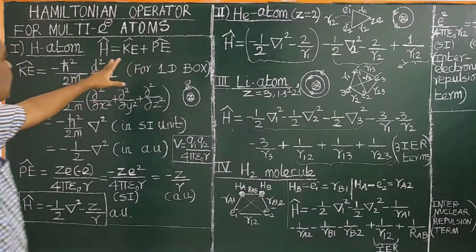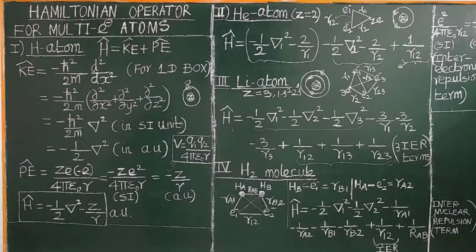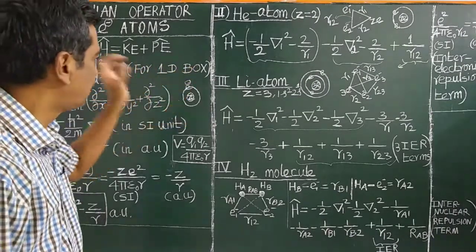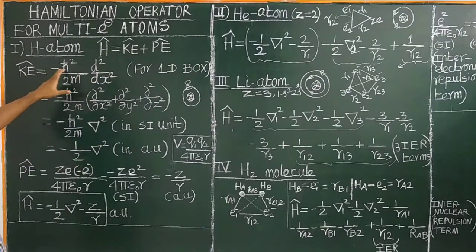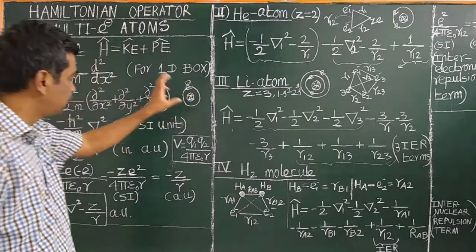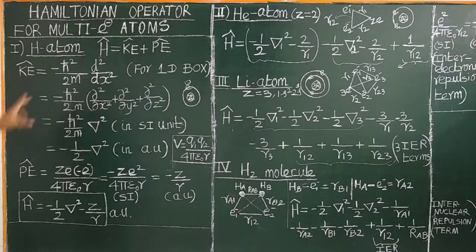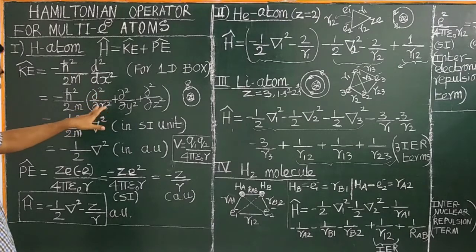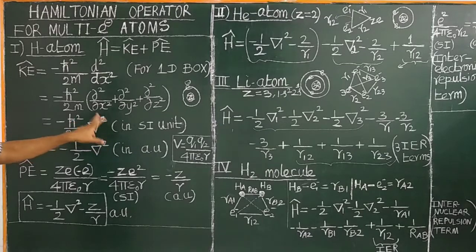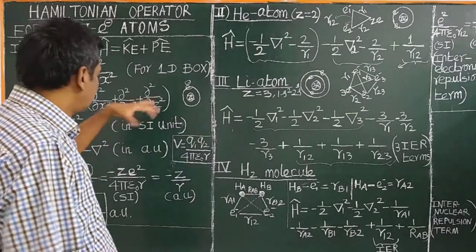The total Hamiltonian operator is the sum of the kinetic energy operator and the potential energy operator. For a particle in a one-dimensional box, the kinetic energy operator equals minus h-cross squared divided by 2m, d-squared by dx-squared. For a three-dimensional box or hydrogen atom, it uses del-squared, which is called the Laplacian operator.